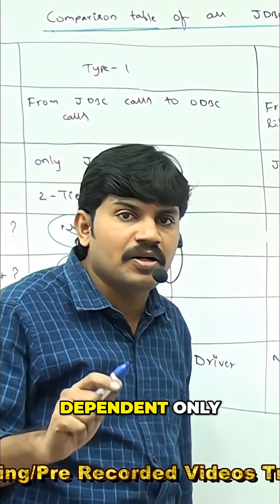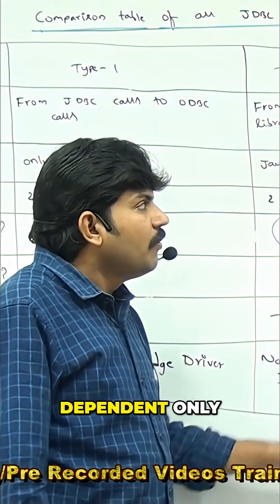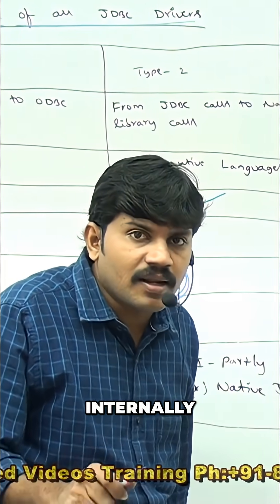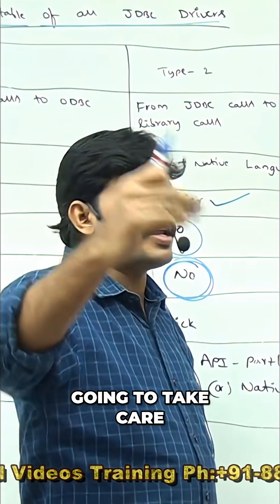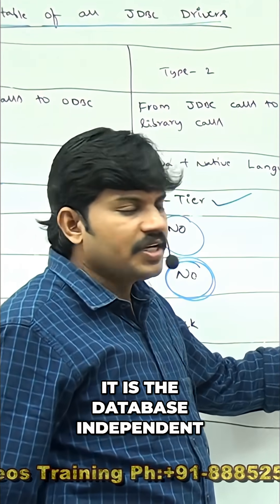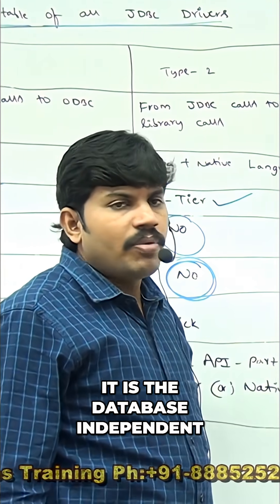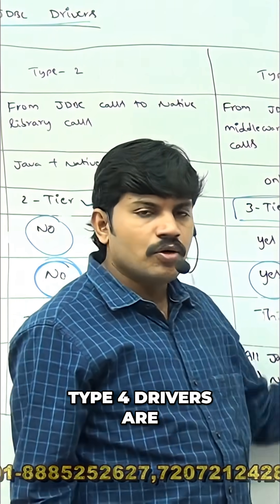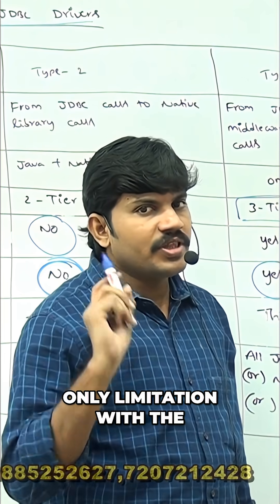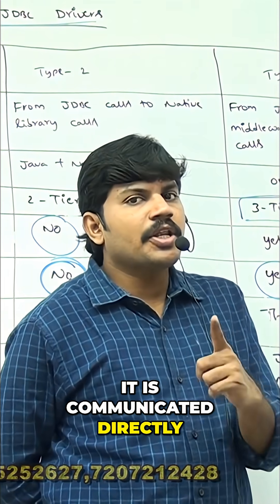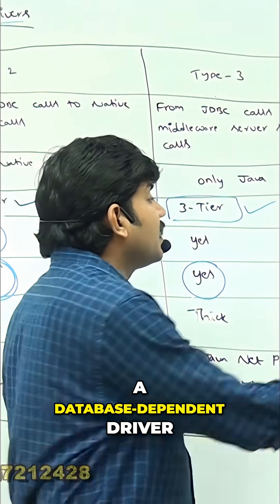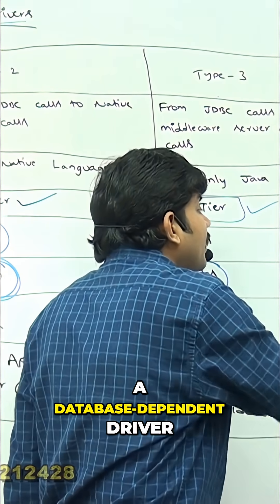Type 2 is database dependent. Type 3 never communicates directly with the database — internally the middleware server takes care of communication, so it is database independent. The limitation of Type 4 is that it communicates directly with the database, which is why it is the database dependent driver.